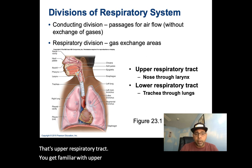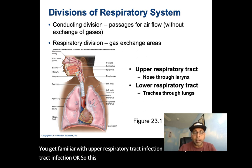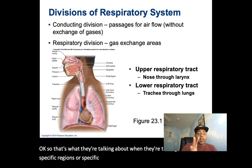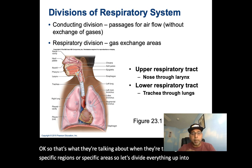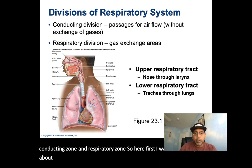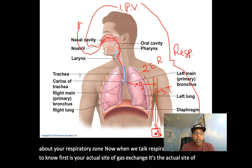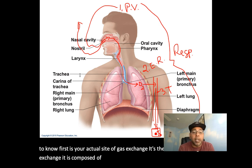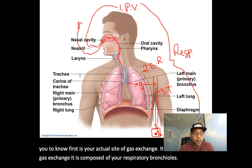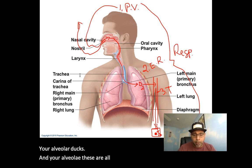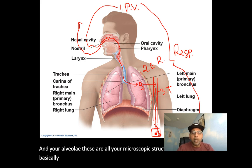You're probably familiar with upper respiratory tract infections and lower respiratory tract infections — that's exactly what those terms refer to. Now let's divide everything into the conducting zone and respiratory zone. The respiratory zone is the actual site of gas exchange. It is composed of your respiratory bronchioles, your alveolar ducts, and your alveoli — all microscopic structures. Let's zoom in to look at those structures.